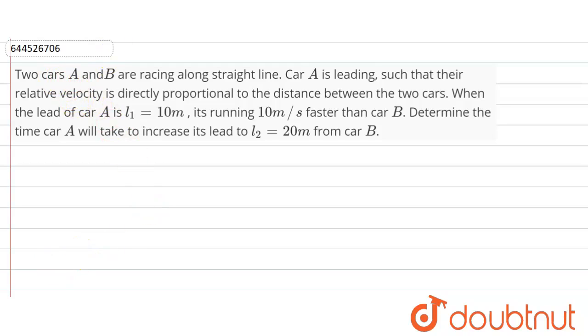Hello friends, question is given here. Two cars A and B are racing along a straight line. Car A is leading such that their relative velocity is directly proportional to the distance between the two cars. When the lead of car A is L1 equals 10m, it's running 10m/s faster than car B. Determine the time car A will take to increase its lead to L2 equals 20m from car B.